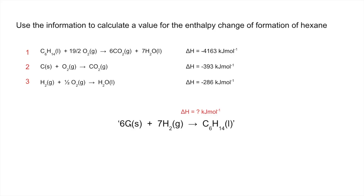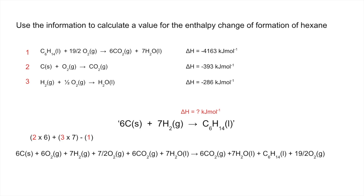We need six carbons — carbon features in equation two but only one mole, so we multiply equation two by six. We need seven moles of hydrogen, which is in equation three, so we multiply equation three by seven. We need one mole of hexane, which is in equation one, but it's on the wrong side of the arrow — it needs to be a product. So we subtract equation one, which effectively flips it. We don't need to adjust the number of moles for equation one.